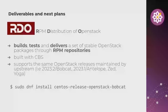Let's talk about RDO. RDO stands for RPM Distribution of OpenStack. It's a deliverable set of repositories — basically RDO takes the upstream OpenStack projects, we package them, and we end up with a set of repositories and packages.